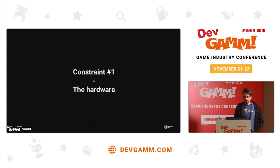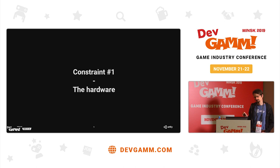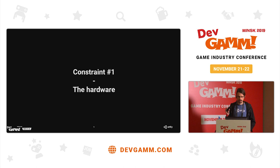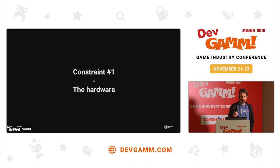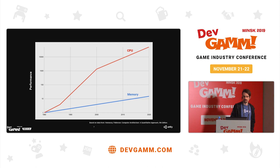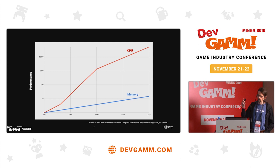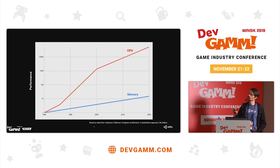Now the interesting part is the constraints that we have to work with. I could have come up with a long list of constraints, but I've only taken two here. The first one is a constraint that everyone has to work with: the hardware — PCs, phones, consoles. They all have the same issue right now. You might have seen this graph because it's been used in a lot of presentations, and it's coming from this book about computer architecture.